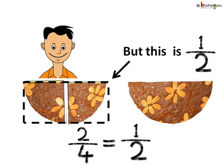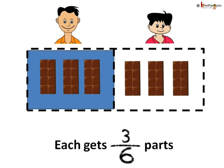Two parts out of four parts is equal to one part out of the two equal parts. Let us take another example.